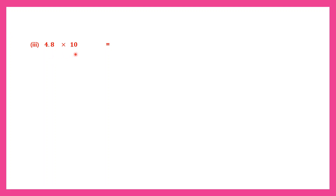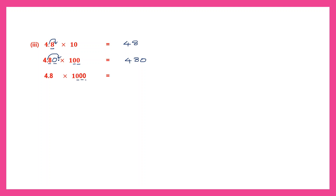Question 3: 4.8 into 10. One zero, so the point moves one place to the right — it becomes 48. Multiply by 100: two zeros, point moves two places to the right, we put a zero in the empty space — giving 480. Multiply by 1000: three zeros, point moves three places, we add two zeros — giving 4,800.